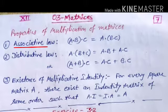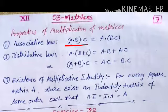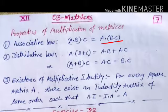First is the associative law. Suppose there are three matrices A, B and C. First, we multiply A into B, and after that the resultant is multiplied with C. Or on the right side, first we multiply B into C, and after that the resultant is multiplied by A. This property is known as associative law.